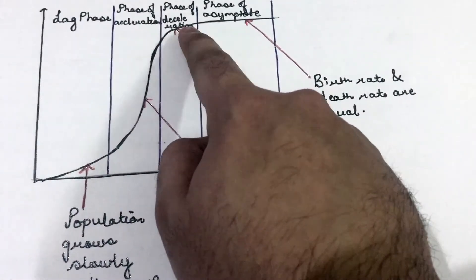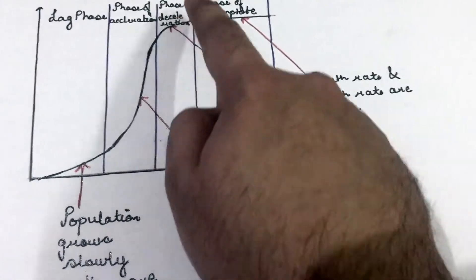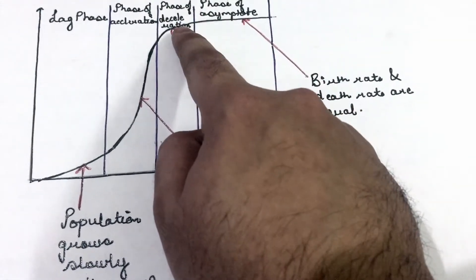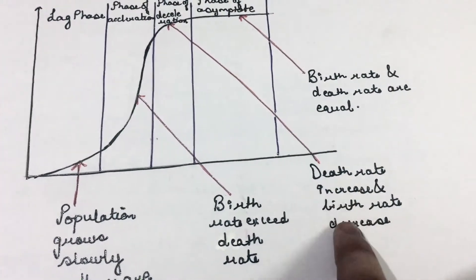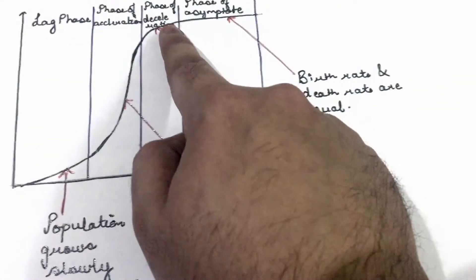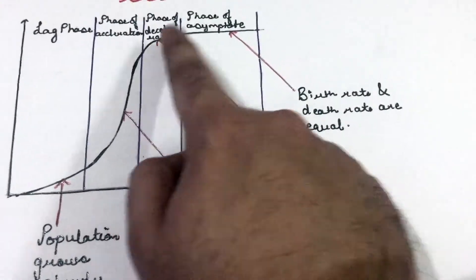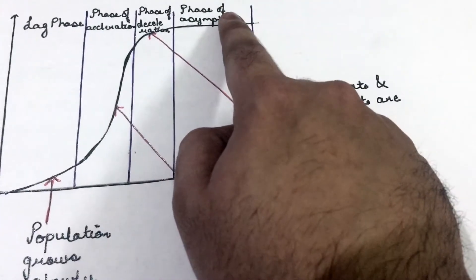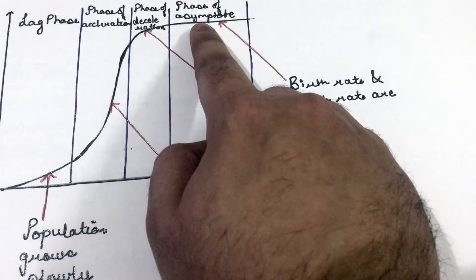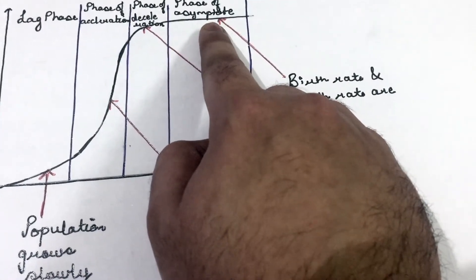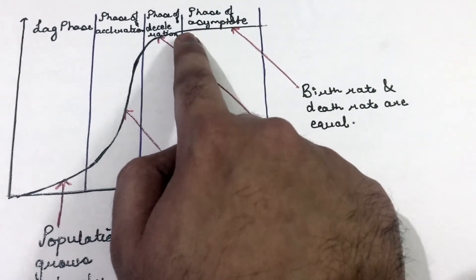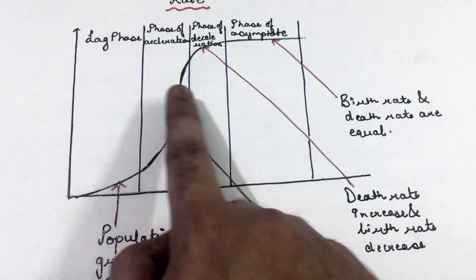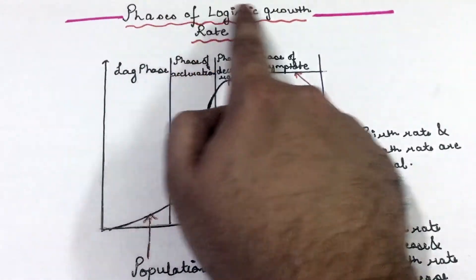The third phase is the phase of deceleration. In the phase of deceleration, the death rate increases and birth rate decreases. The last phase is the phase of asymptote. In the phase of asymptote, birth rate and death rate are equal, so we have a constant line.